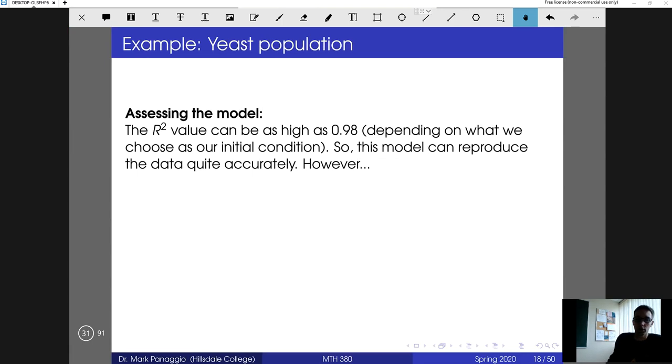Let's try to evaluate these models. One of the common techniques we discussed earlier in the semester was using the R-squared value. R-squared measures the proportion of the variability in the data that is described by the model. In this case, depending on exactly how you fit it, you can get an R-squared value that's as high as 0.98. So that's a pretty good fit.